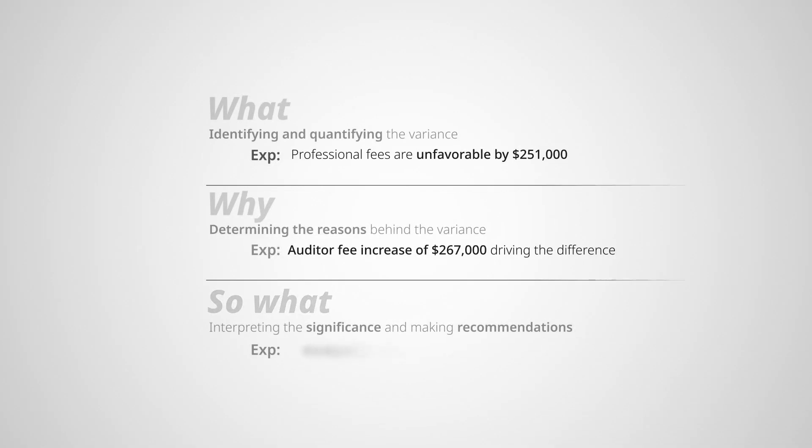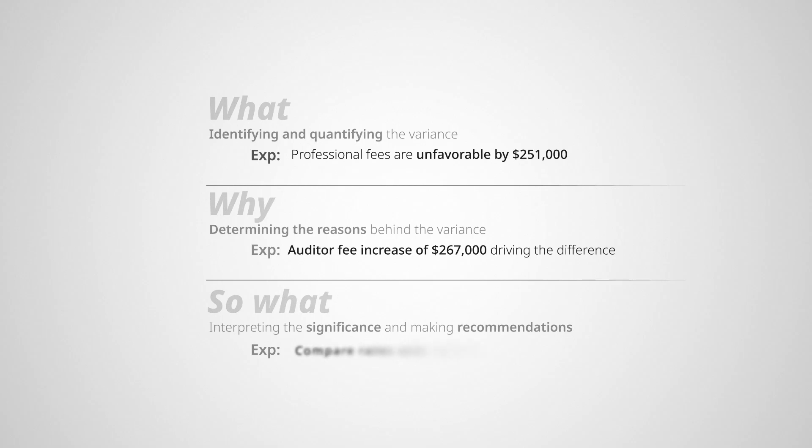Many finance teams stop there, thinking the job is done — but if you stop there, you're leaving a lot of value on the table. The so what is where the real value is. In this case, you dig deeper and find out the cost increase isn't due to more billable hours or a more complex audit — it's due to a significant price increase. So the recommendation is to compare the new price to other audit firms and consider changing auditors. Now you're actually helping leaders make better decisions by answering: do we need to do something about this, or is everything okay? The key is to apply the 80/20 rule — find the 20% of line items that explain 80% of the variance, and don't stop digging into the numbers and interviewing your cross-functional business partners until you've found the root causes for the variances that move the needle.